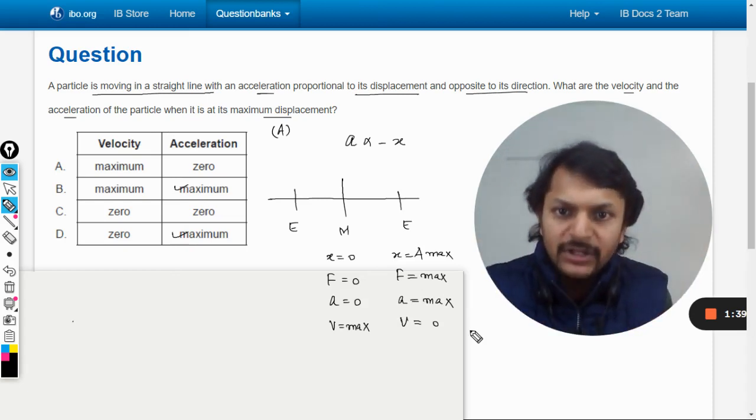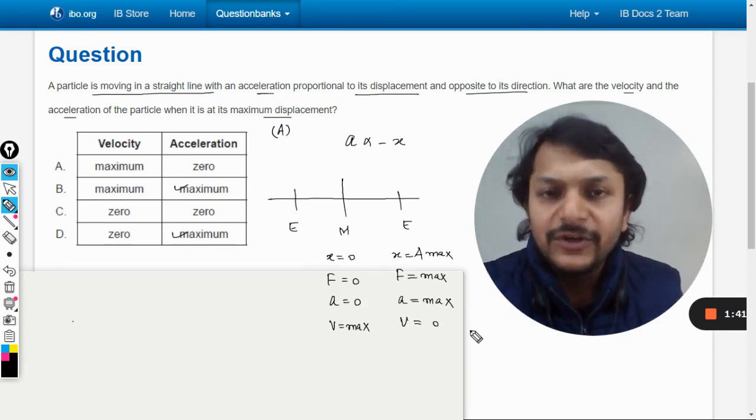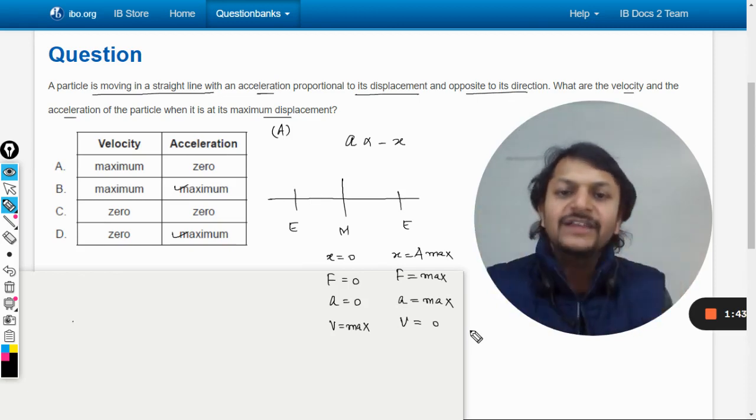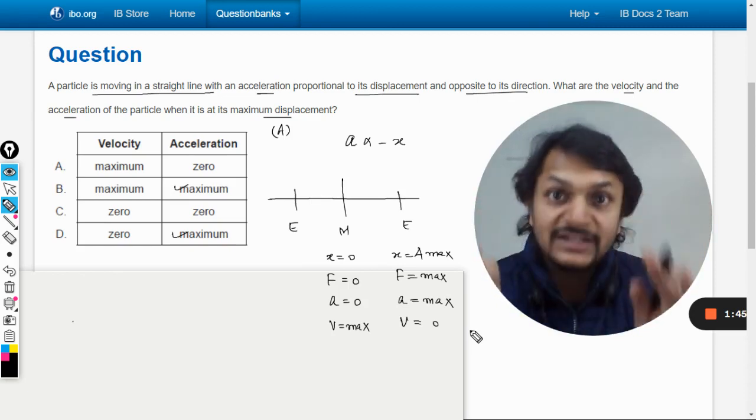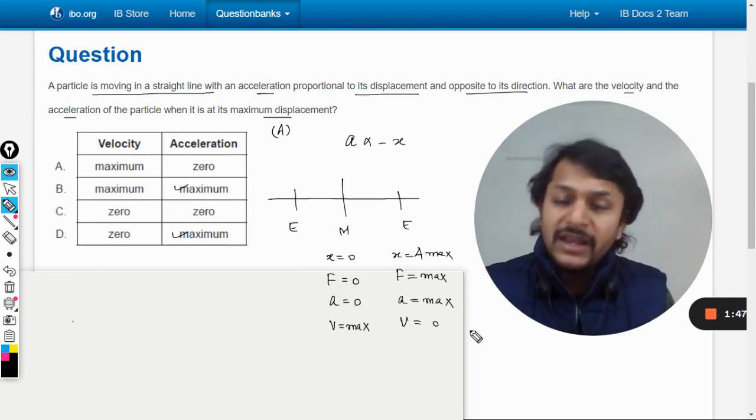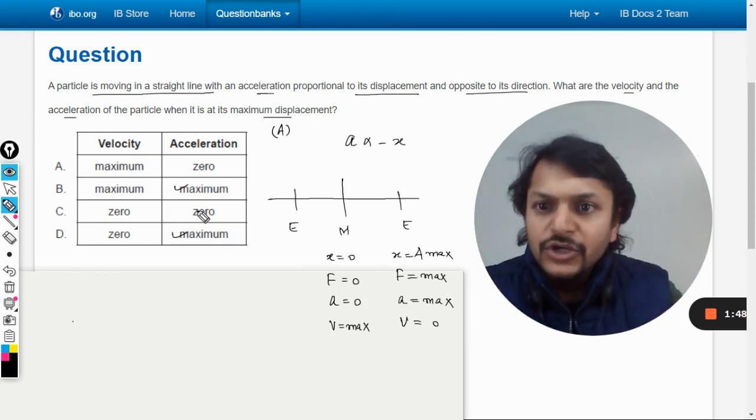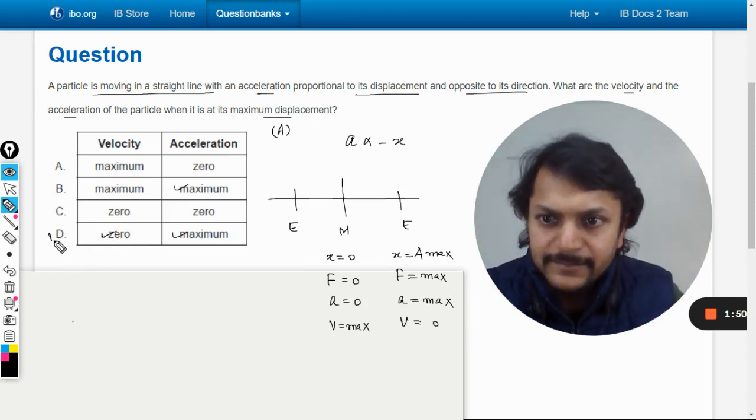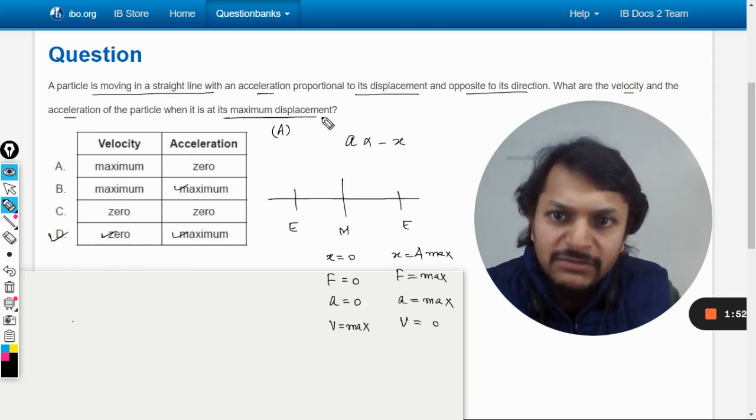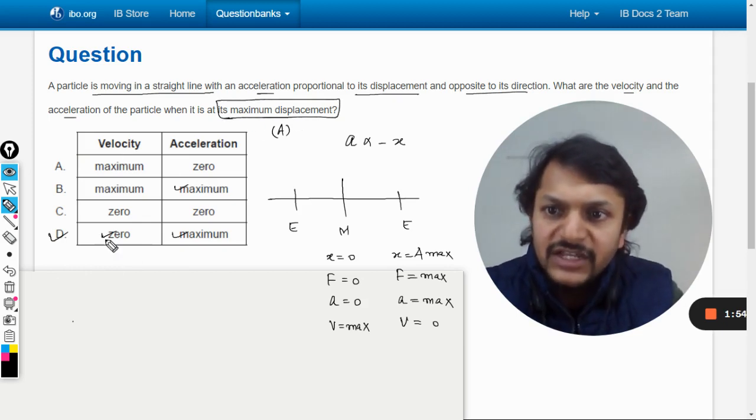I've given this table again in this video so you can revise and remember these concepts. There have been many questions with the same concept. Our answer will be D because at maximum displacement, the velocity is going to